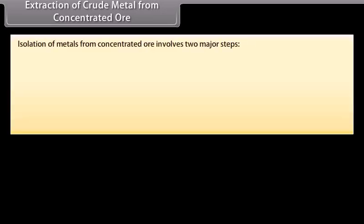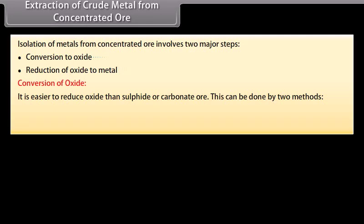Extraction of crude metal from concentrated ore. The concentrated ore must be converted into a form which is suitable for reduction. Oxides are easier to reduce. Thus, isolation of metals from concentrated ore involves two major steps: conversion to oxide and reduction of oxide to metal. Conversion of oxide: It is easier to reduce oxide than sulphide or carbonate ore. This can be done by two methods: calcination and roasting.